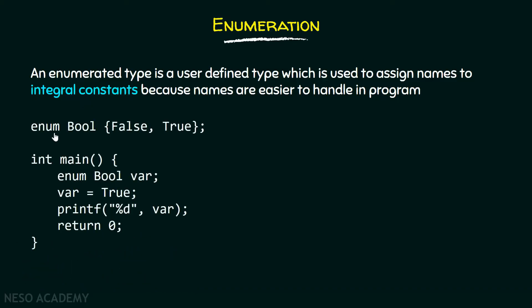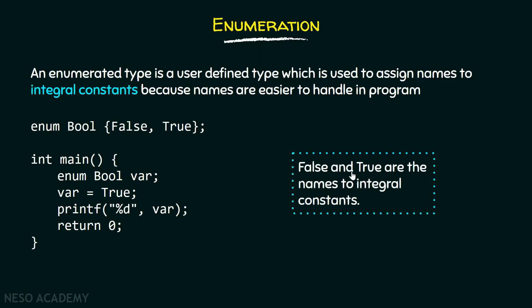For example, here we have declared an enum bool and these are the names false and true. Within this main function, we have been declaring a variable of type enum bool and we are assigning it a value — which is basically a name, that is true — and it is actually representing some integral constant. We are just printing this value on the screen. False and true are the names to integral constants. It is declared just like a structure, but instead of the struct keyword, you have an enum keyword.